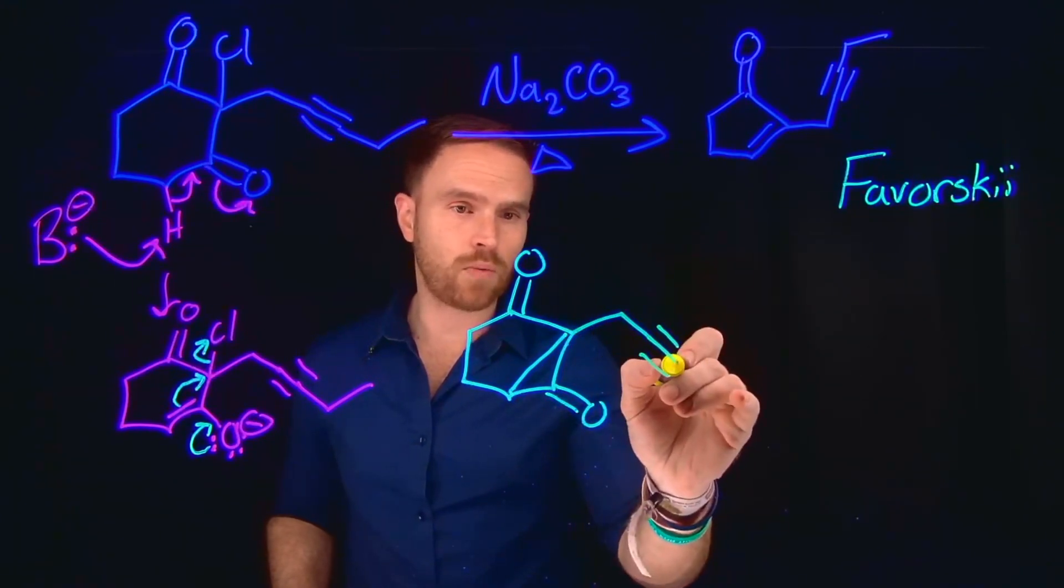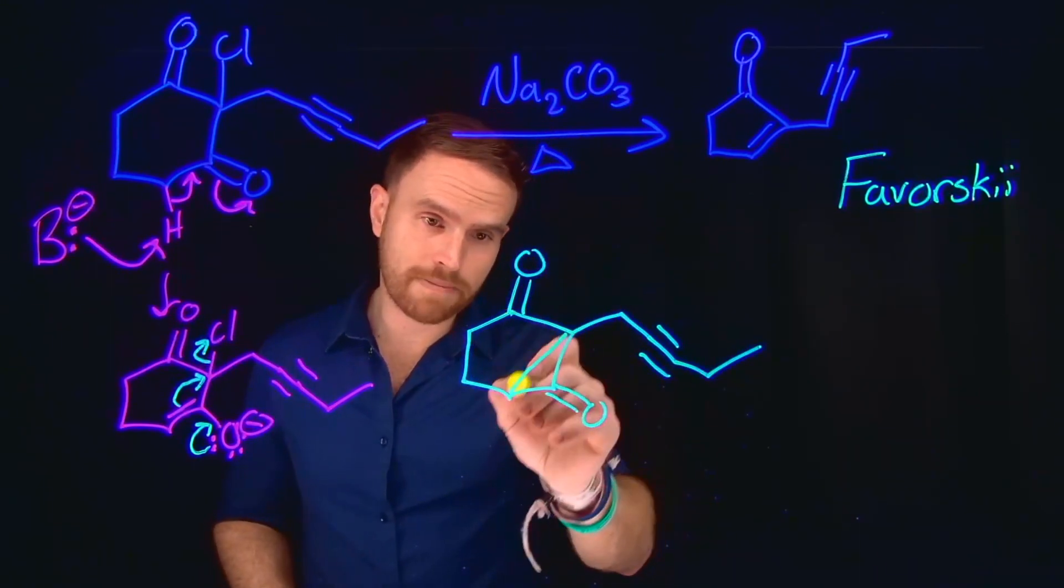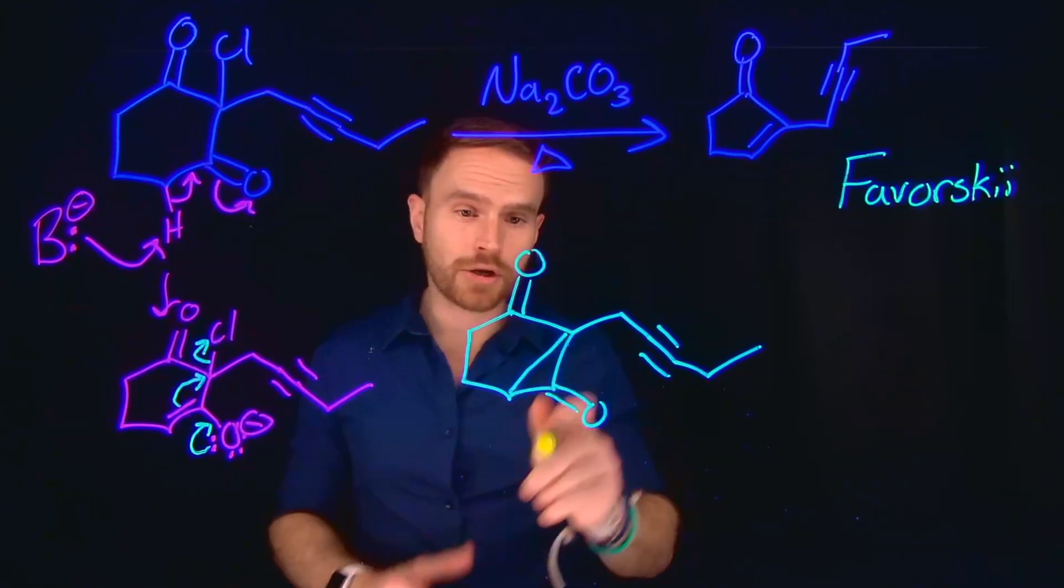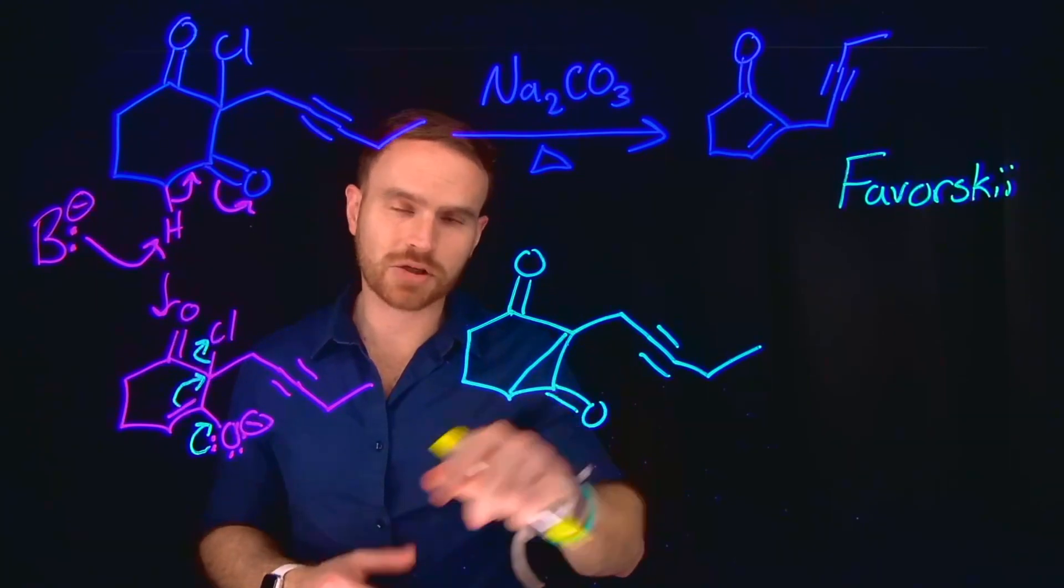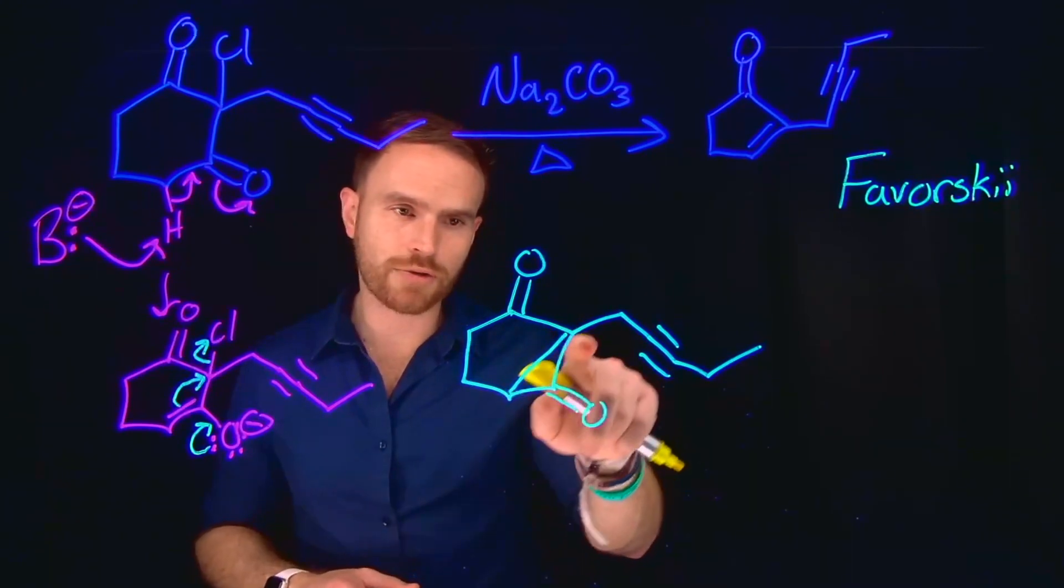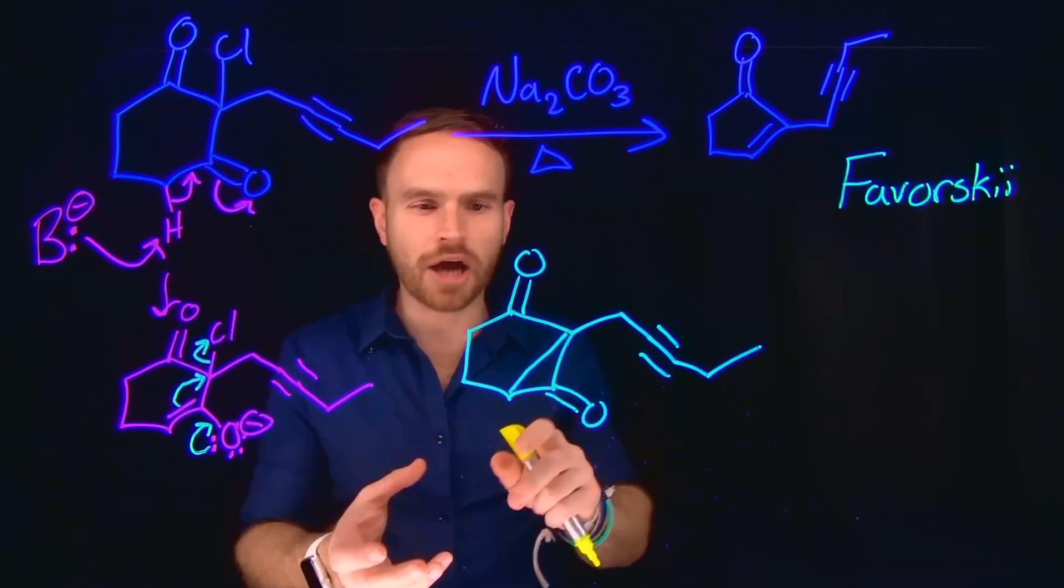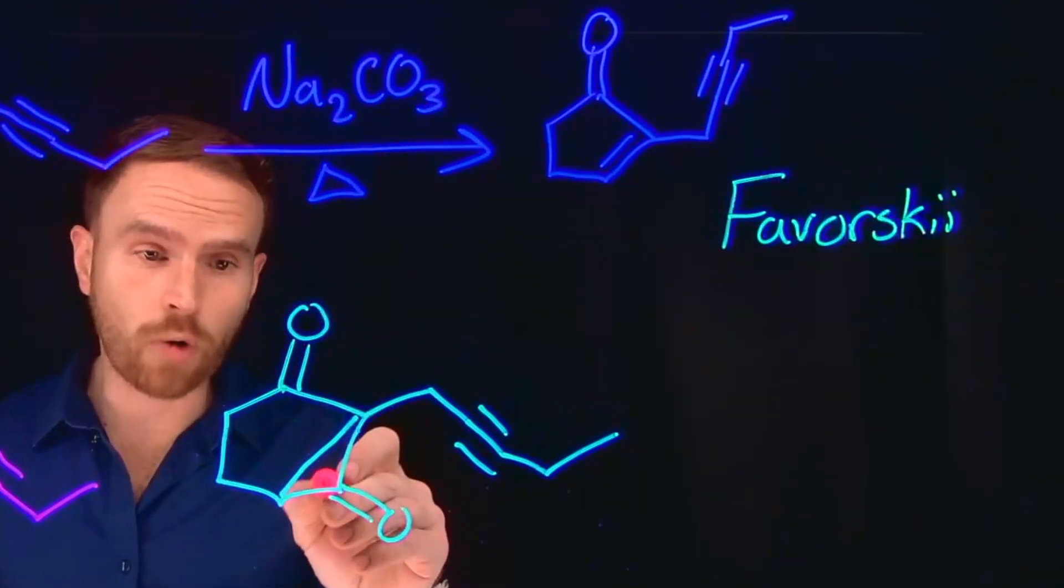So from here, now what we have generated is mostly this six-membered ring with a three-membered ring fused inside of it, and this is known as a cyclopropanone. But notice that this is going to be an incredibly strained ring, where we have an sp2 hybridized carbon with two other sp3 hybridized carbons. So the bond angles aren't going to be the ideal geometry for this type of carbon. And because of that, this will cause this to open up.